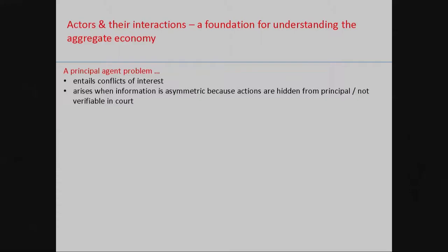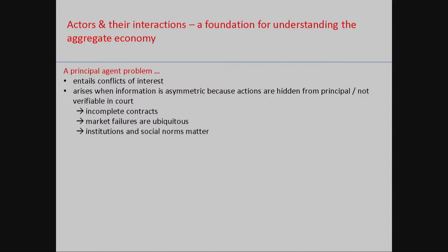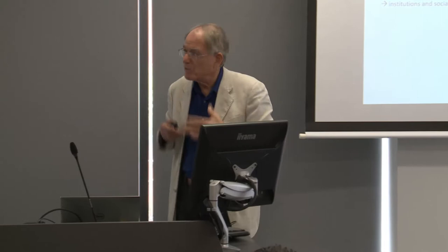We then move on to more applied, modern capitalist economy kinds of problems. We focus on actors and what they do, and use principal agent models to explain how they work. These are some of the important reasons why institutions occupy such an important part of our story: we have incomplete contracts, which means something else other than the enforcement of a contract has to be part of the exchange. Whatever that is, it's going to be affected by institutions, bargaining power, social norms, and so on. Therefore, market failures are ubiquitous, and institutions of some kind are going to be involved in trying to address the consequences.